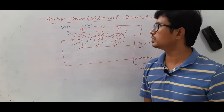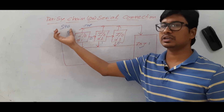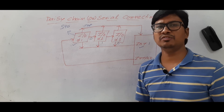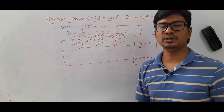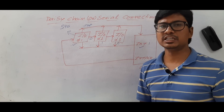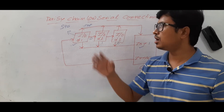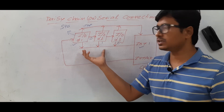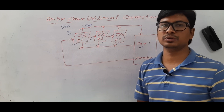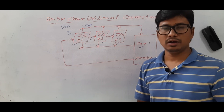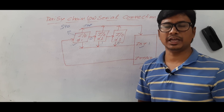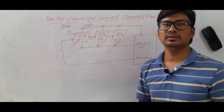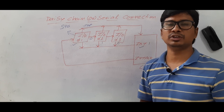I hope you have understood how this serial communication works and what the starvation problem is. If you still have any doubts related to this concept, feel free to ask in the comment section — I will try to clear your doubts in less than 24 hours. In the next video, we will discuss how priority-based mechanism works in parallel connection. Please press the like button if you really like my teaching, share the videos with your friends, subscribe to my channel. Thank you for watching my video, have a nice day.